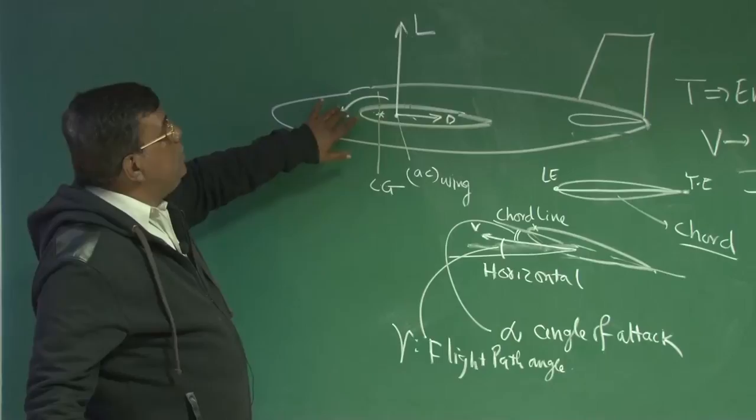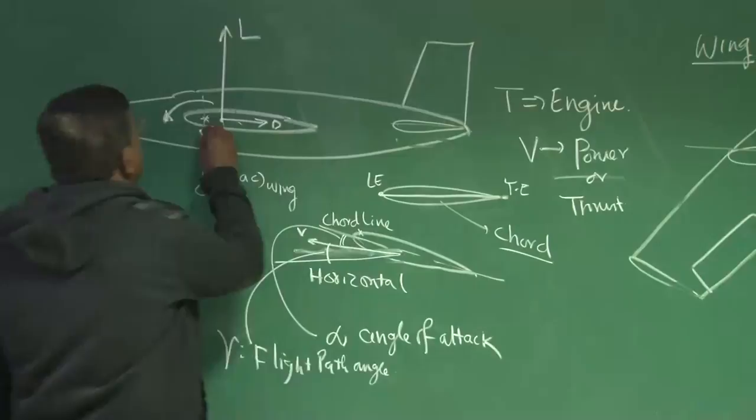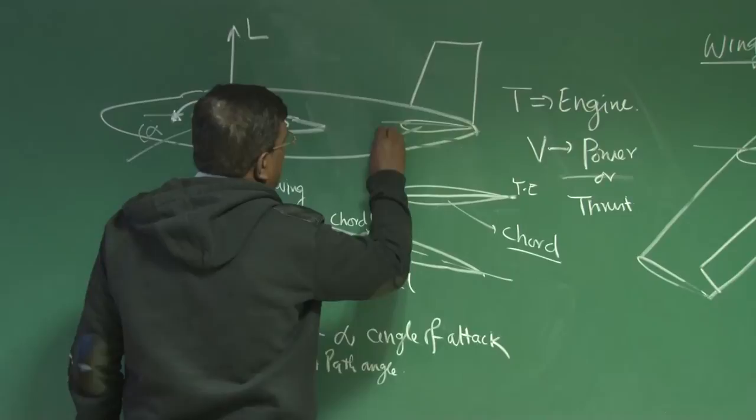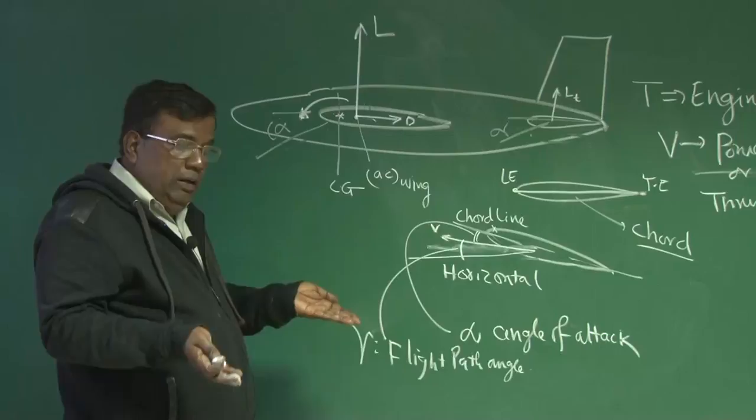If this is seeing some angle alpha which is giving the lift, it will also see some alpha which gives you a lift upward like this, lift on tail. This also will give a nose down moment about CG. This although they will give lot of lift upward, but same time it will try to take the aircraft down like this. So, you have to nullify that. How do you do that? If you see horizontal tail, there is elevator.